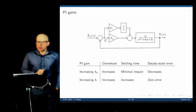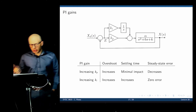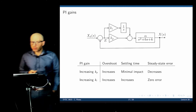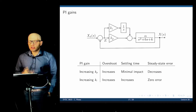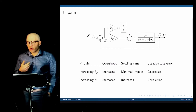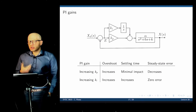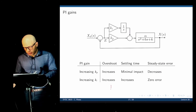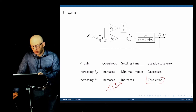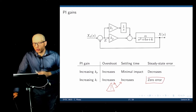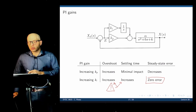Summary table: increasing KP increases overshoot, doesn't change settling time, and decreases (but never eliminates) steady state error. Adding the integral controller increases overshoot, increases settling time, but makes steady state error zero. The only way to eliminate steady state error is with an integral controller—a proportional controller alone cannot do it.